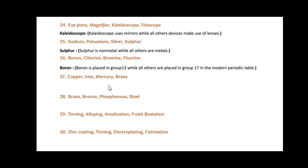Next: Copper, Iron, Mercury and Brass. Among these, Brass is the odd one out. Since Brass is an alloy, while all others — Copper, Iron and Mercury — are metals.